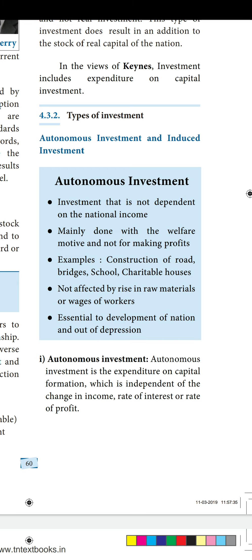Autonomous investment is mainly done with the welfare motive and not for making profits. It is not affected by rise in raw materials or wages of workers, and it is essential to the development of the nation and getting out of depression. Examples given are construction of roads, bridges, schools, and charitable houses.